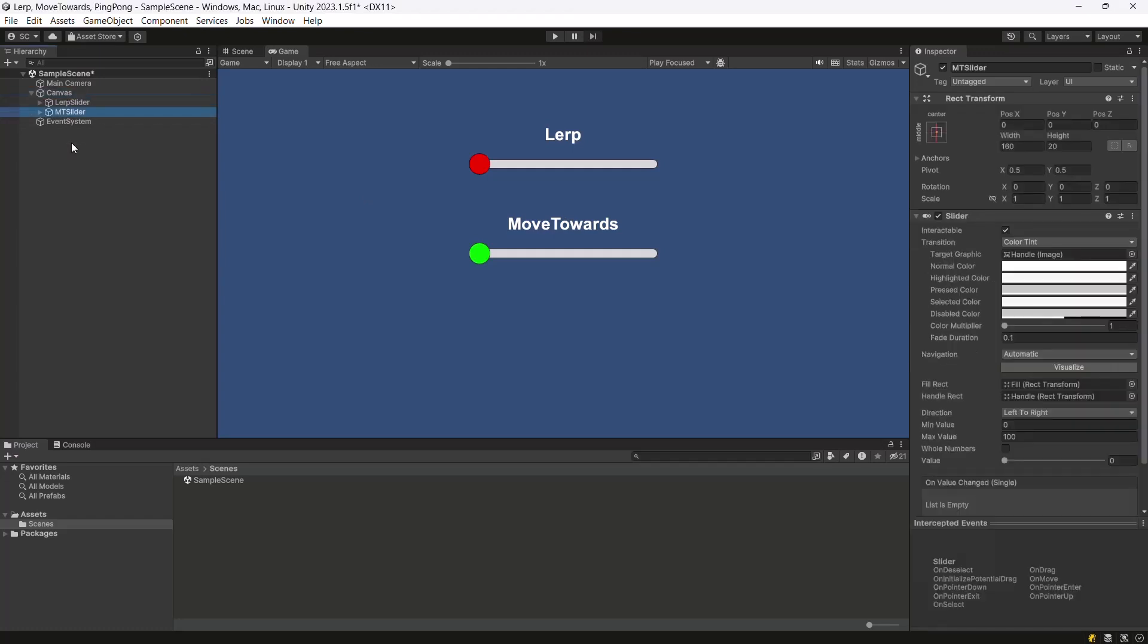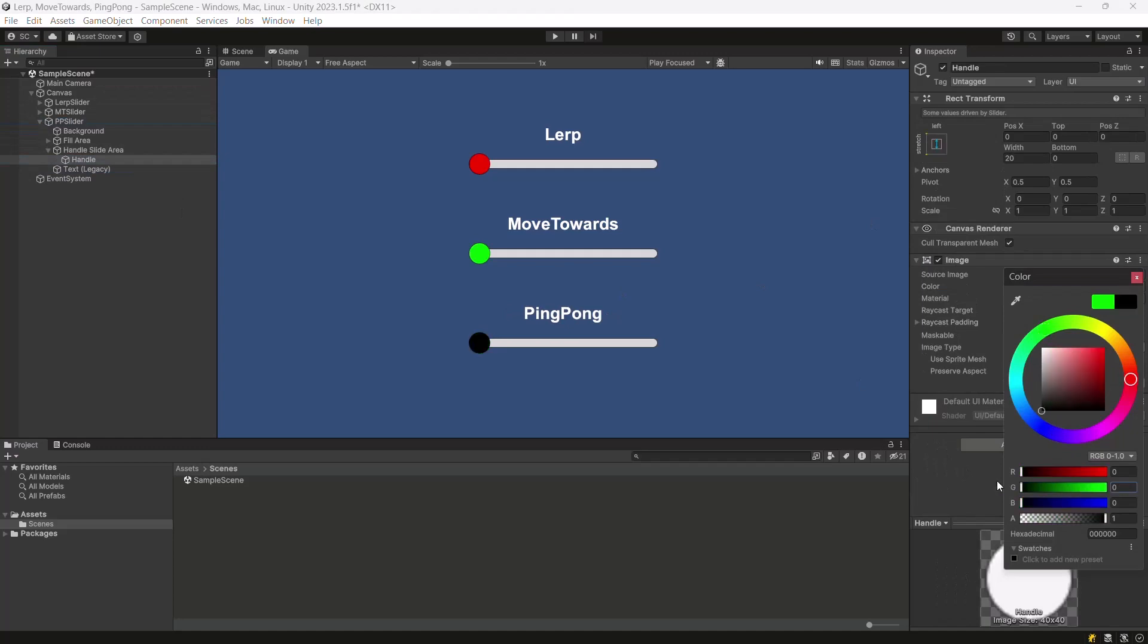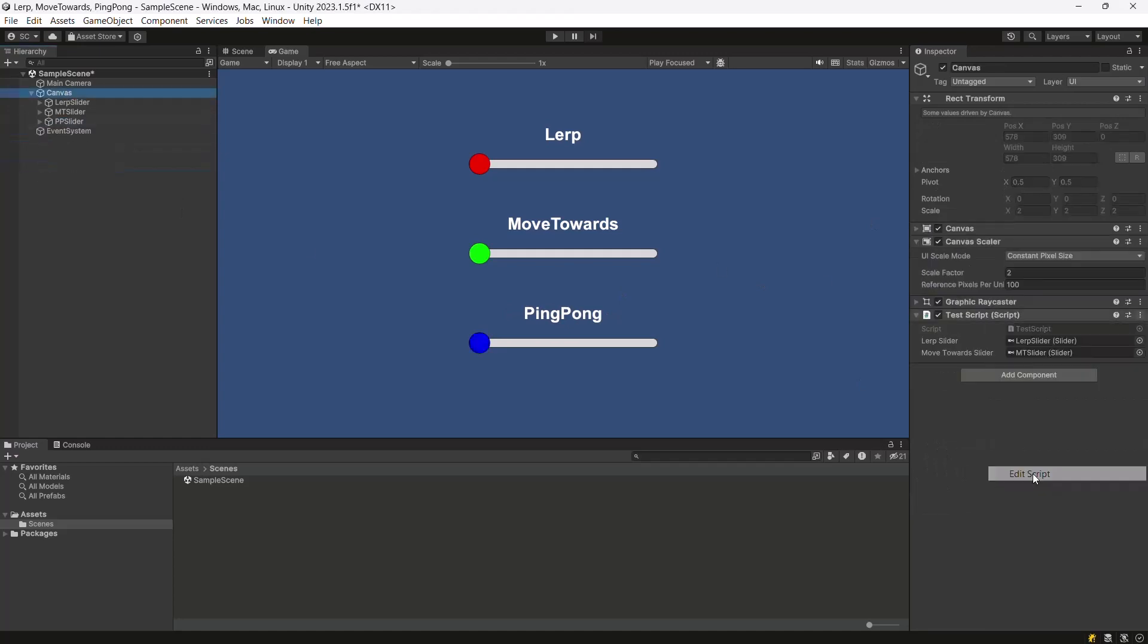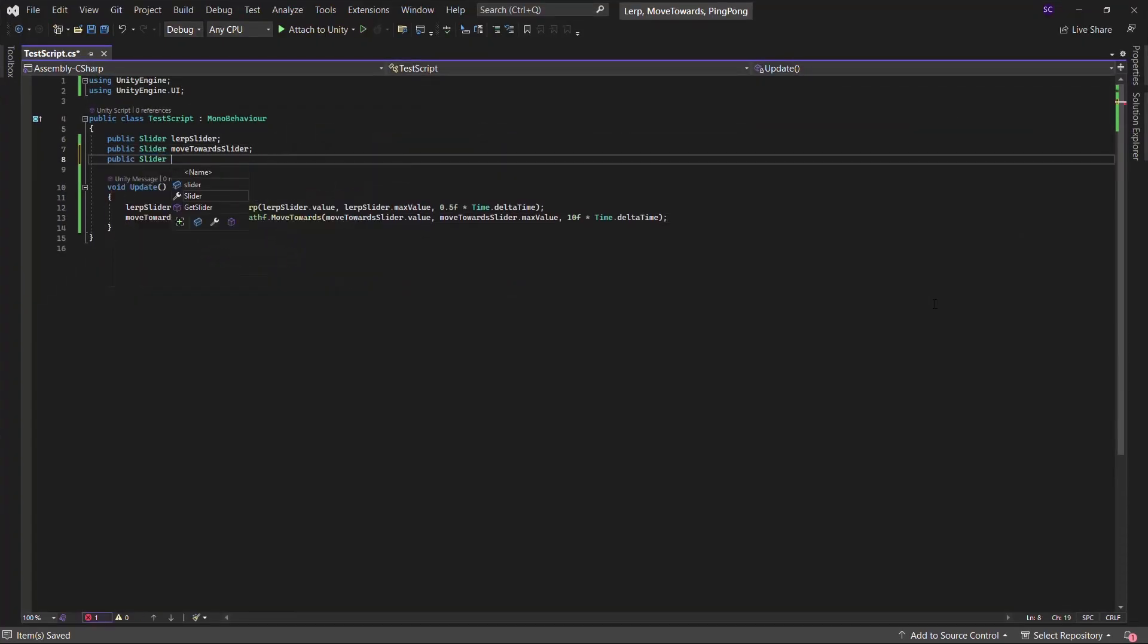Now, set up a slider for the PingPong function. Open the script and define the PingPong slider.